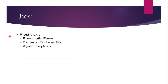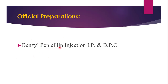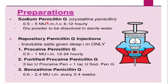Benzyl penicillin is also used in prophylactic treatment of rheumatic fever, bacterial endocarditis, and agranulocytosis — which is a decrease in the number of WBCs, specifically neutrophils. For official preparations, it exists in the dosage form of injection — benzyl penicillin injection, official in IP as well as BPC. Preparations include sodium penicillin G (crystalline penicillin) by injection, and repository penicillin G injections such as procaine penicillin G, fortified procaine penicillin G, and benzathine penicillin G. The major route is injectable — either IV or intramuscular.